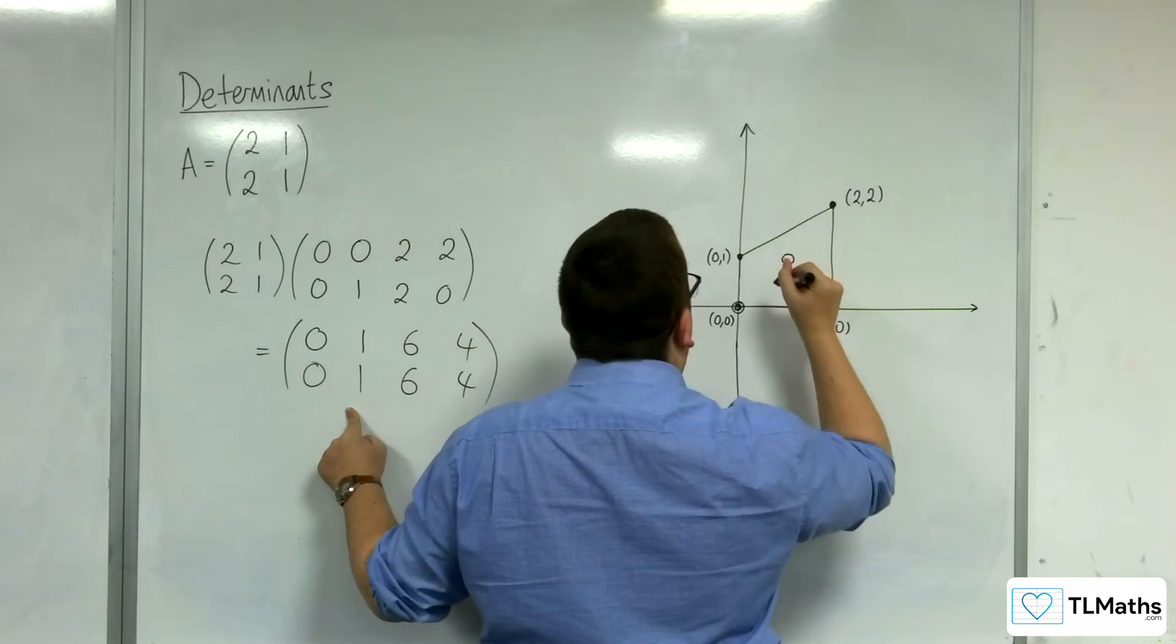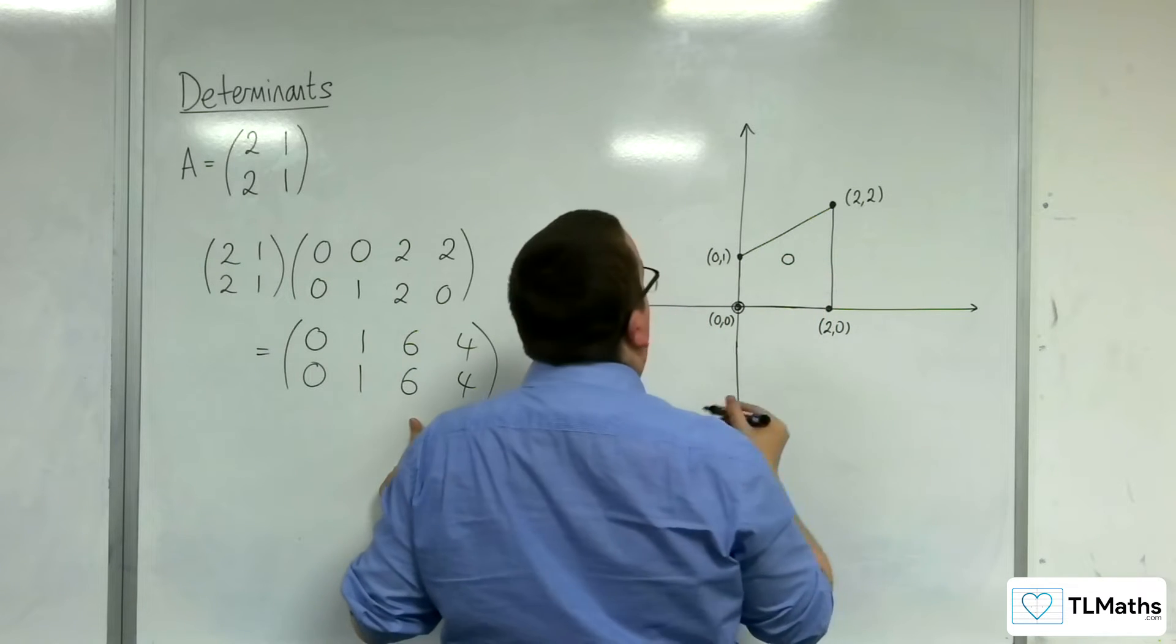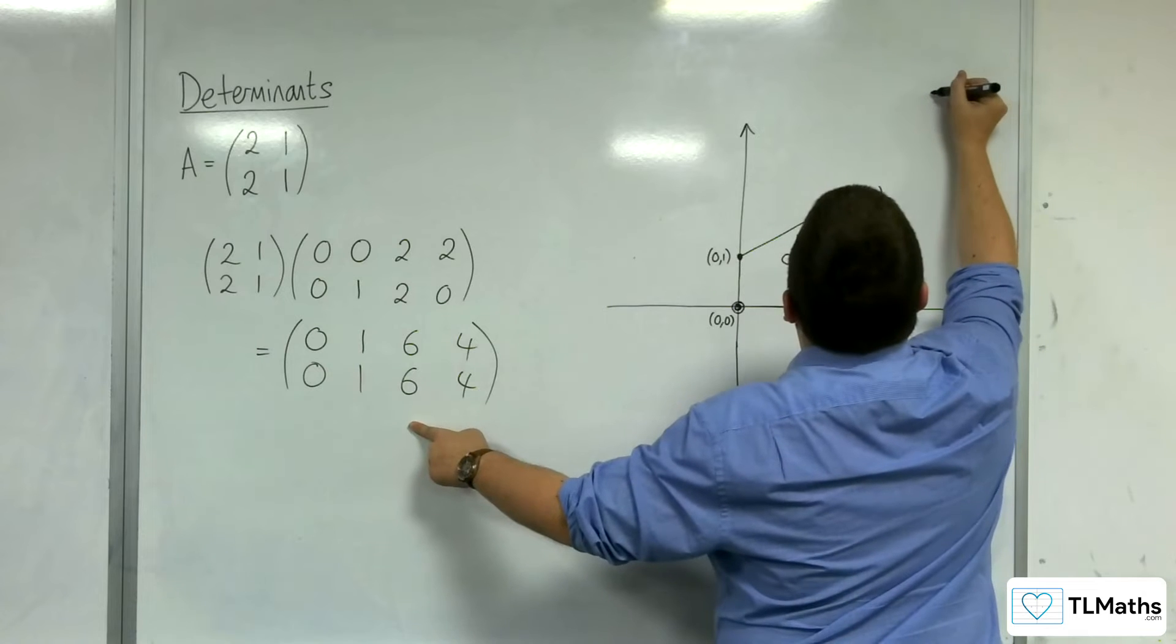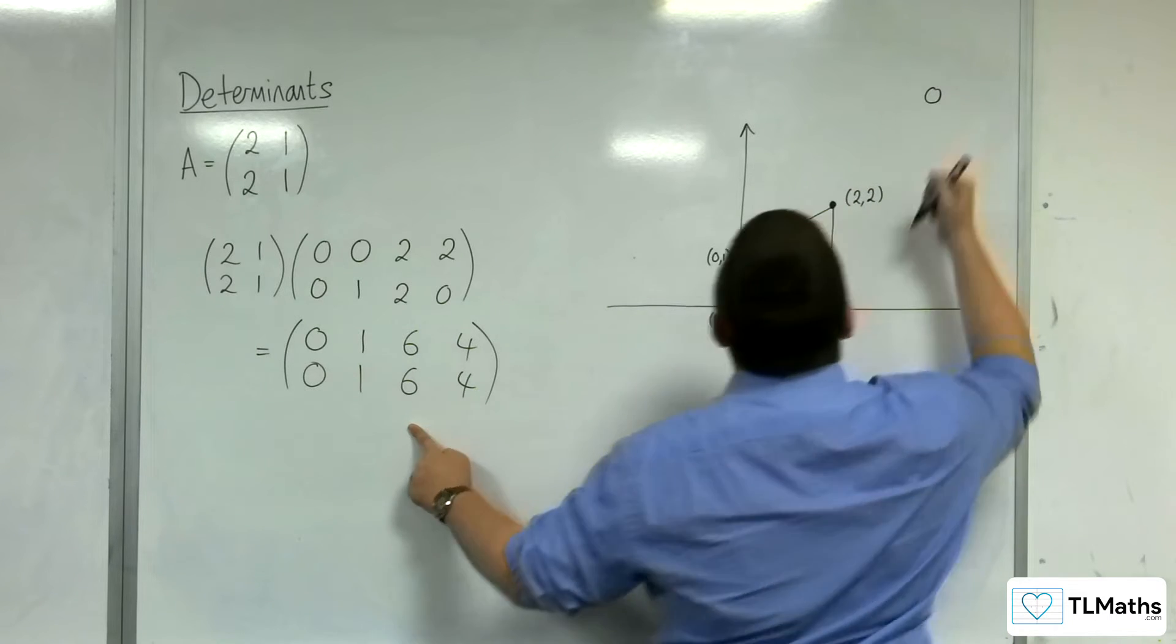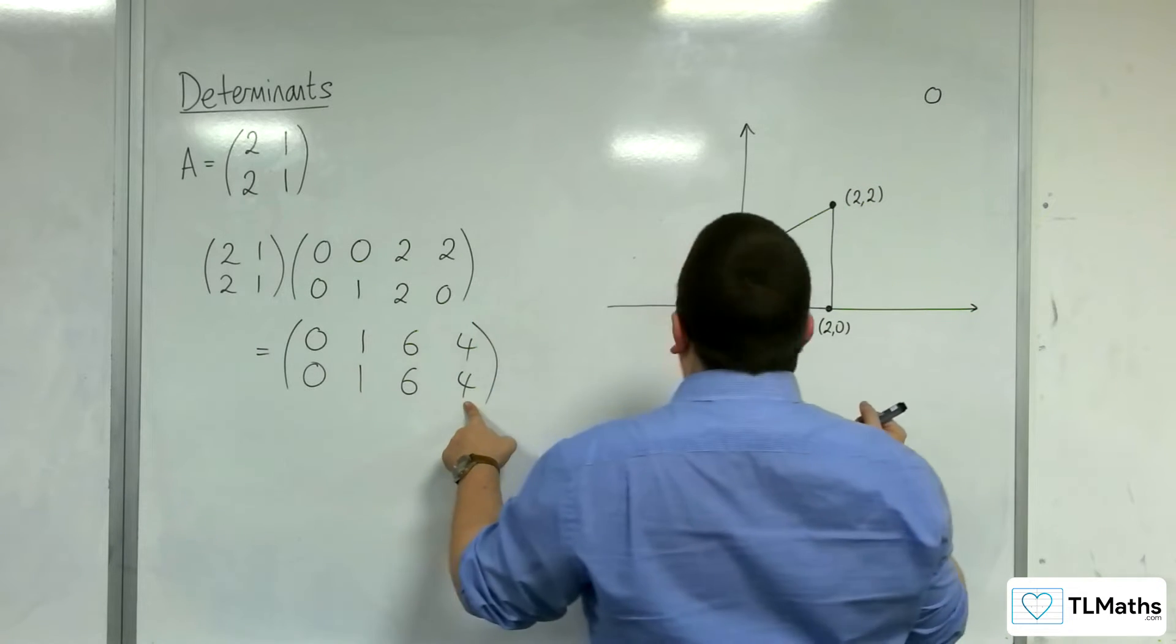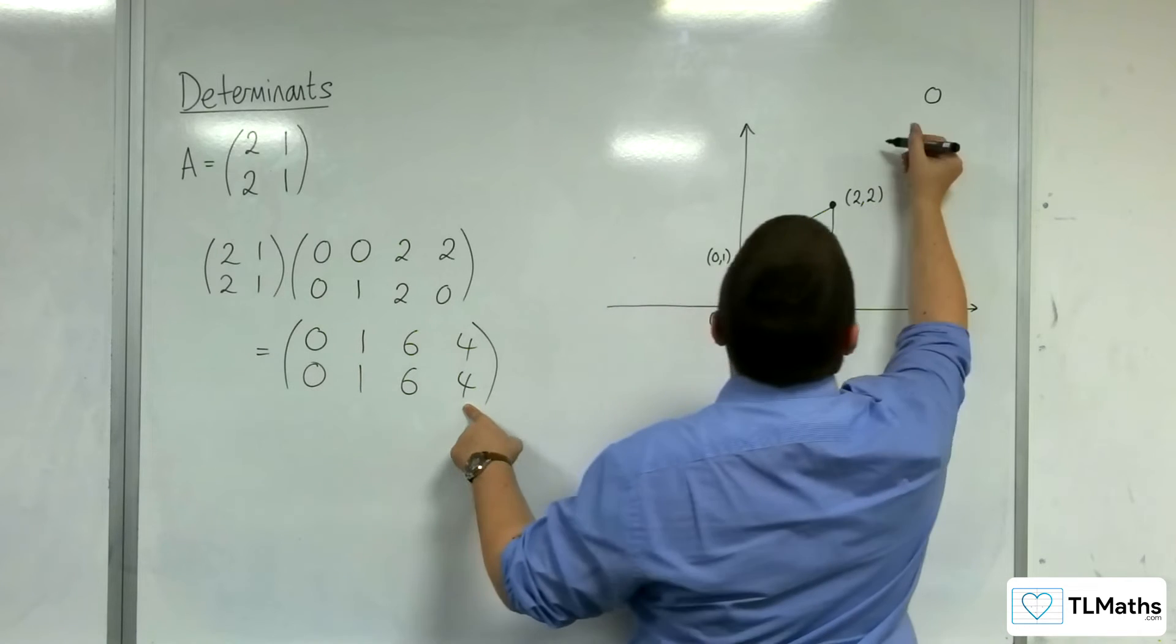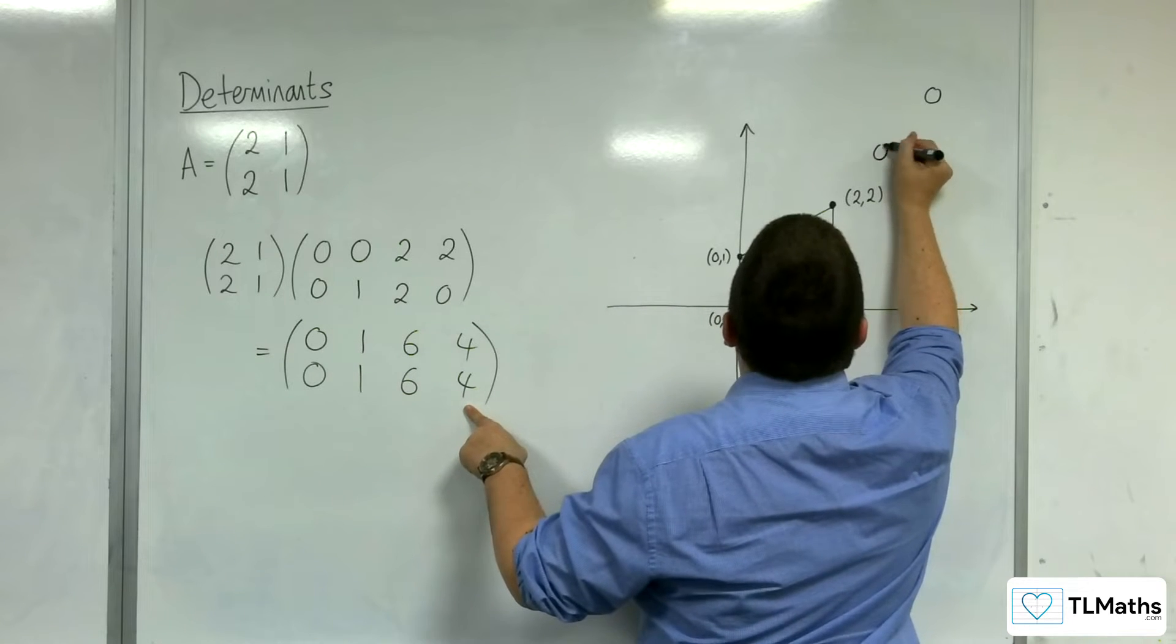Okay. We've got 2, 2 being mapped to 6, 6, so somewhere up here, I can't really draw it exactly. And then we've got 2, 0 being mapped to 4, 4, so something like this.